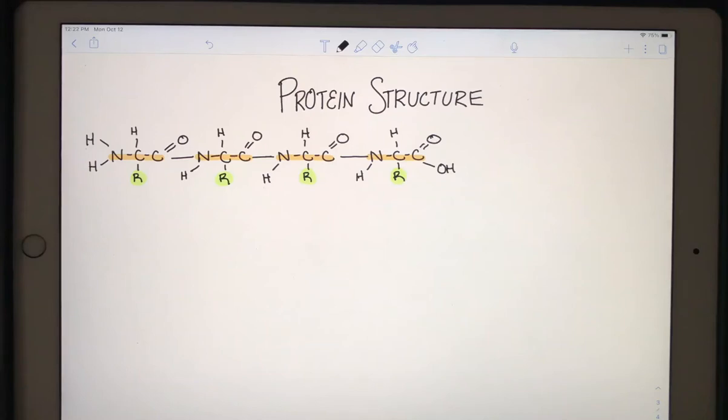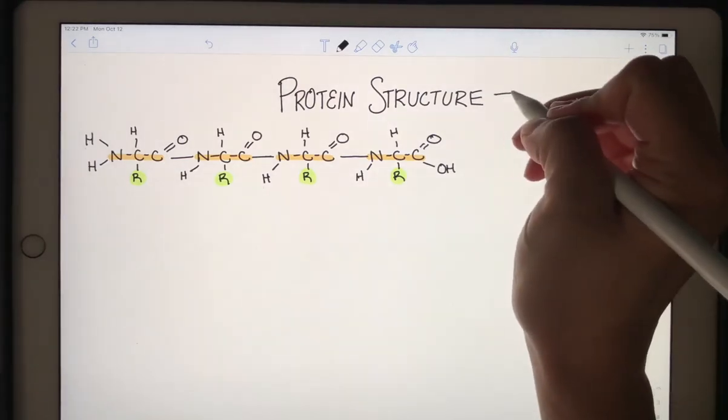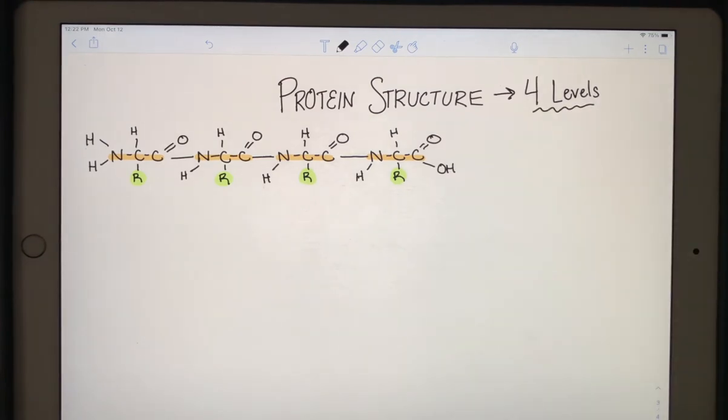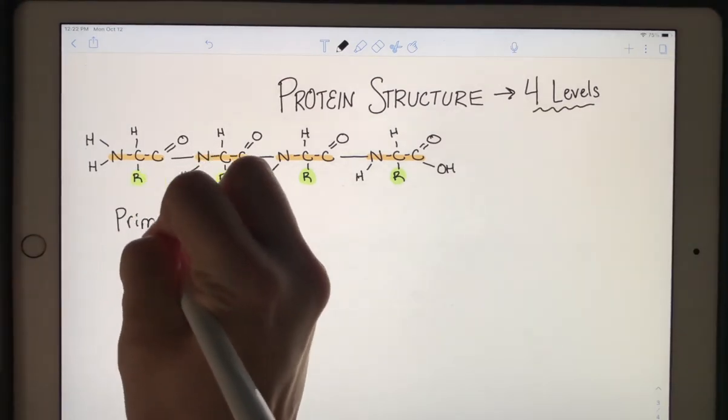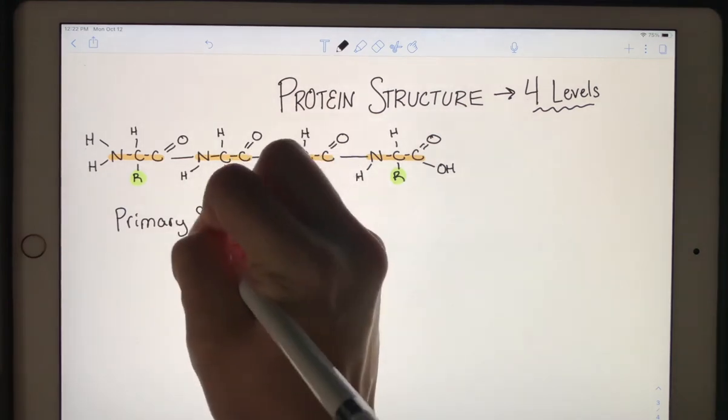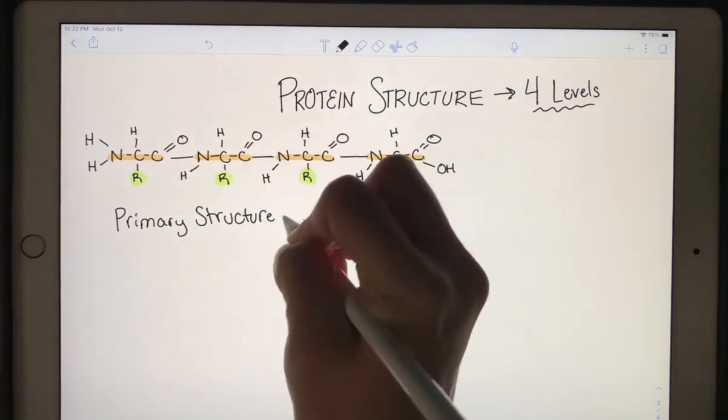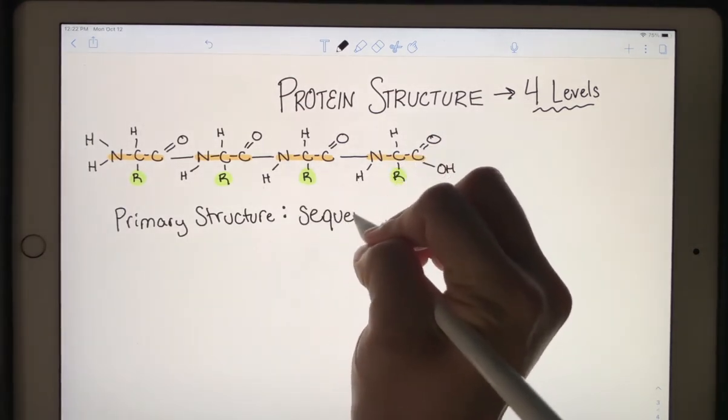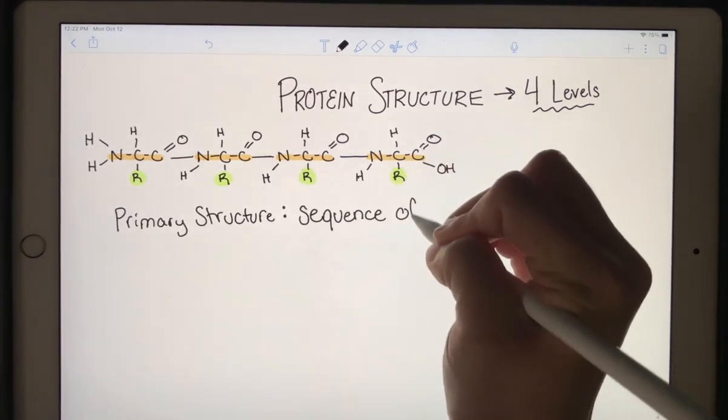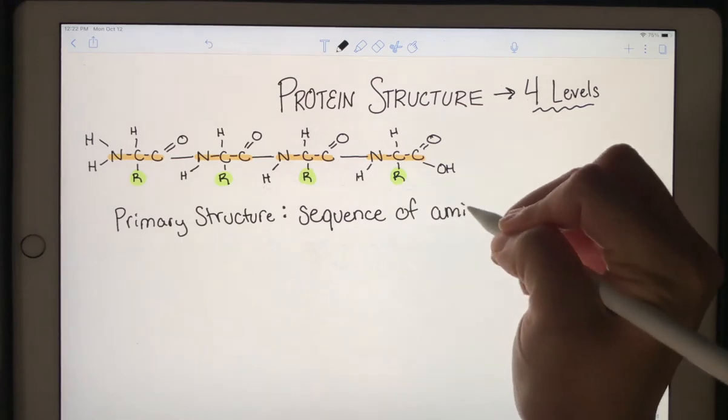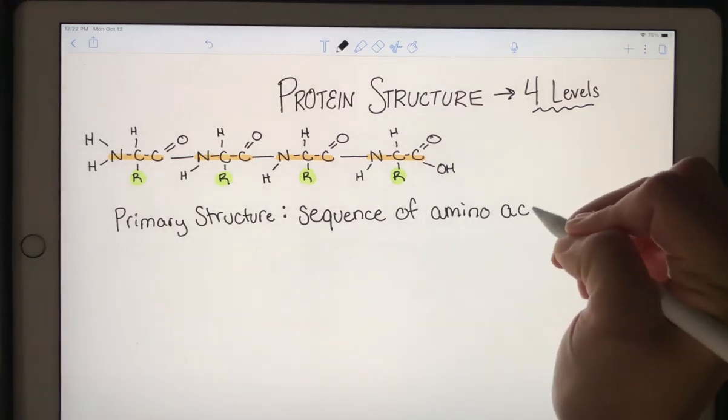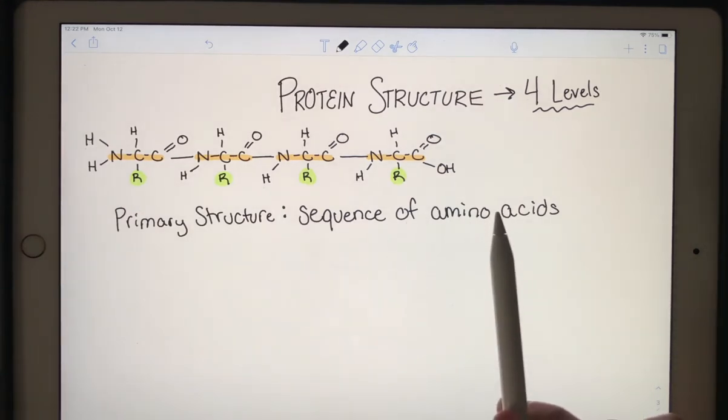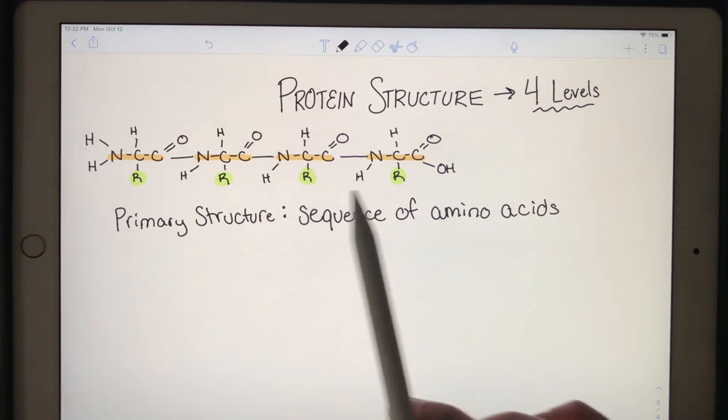We need to talk a little bit more about protein structure, and that's because there are four different levels of structure. The first one we already have. We call that the primary structure, and that primary structure is simply the sequence of amino acids. So we're just saying what order they're in. That's our primary structure - what amino acids we have.